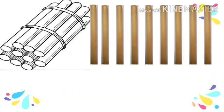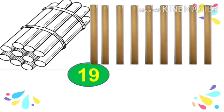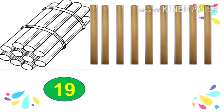Now we will again count. We know there are 10 sticks in a bundle. Continue from 10 onwards: 11, 12, 13, 14, 15, 16, 17, 18, 19. Total number of sticks: 1, 9 — nineteen. N-I-N-E-T-E-E-N, 19.